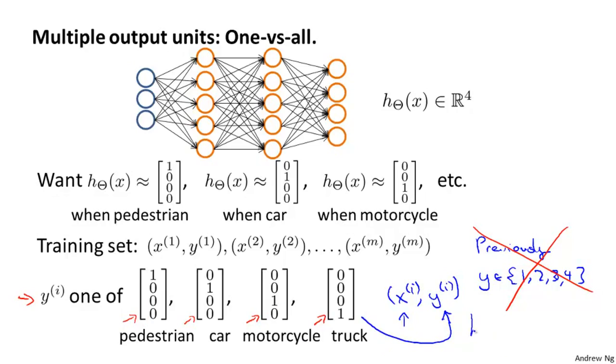And hopefully we can find a way to get our neural network to output some value so that h of x is approximately y. And both h of x and y i, both of these are going to be, in our example, four dimensional vectors when we have four classes.